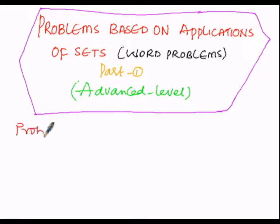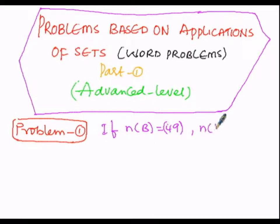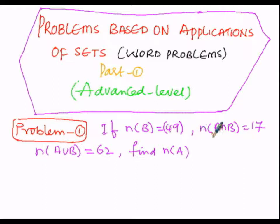Problem number one: if N of B is equals to 49, and N of A intersection B is 17, and N of A union B is equals to 62, then we have to find out N of A. The unknown value is N of A, which we find by utilizing N of B, N of A intersection B, and N of A union B.